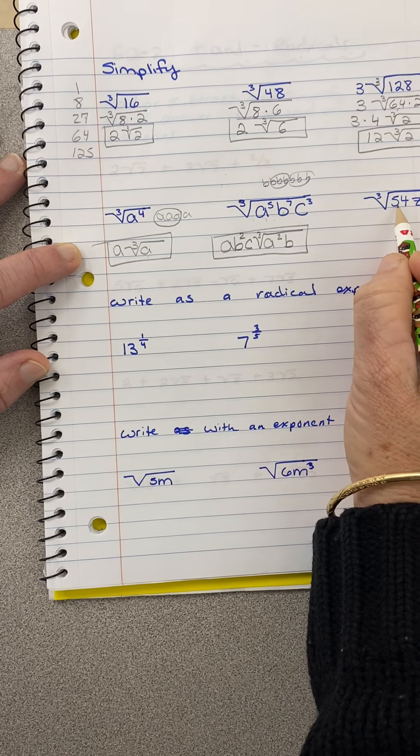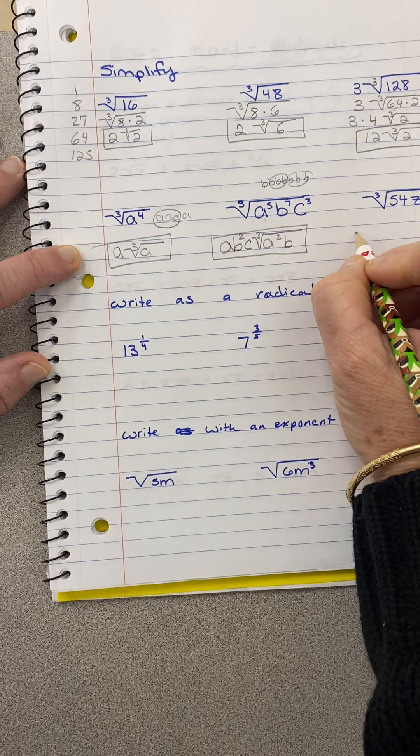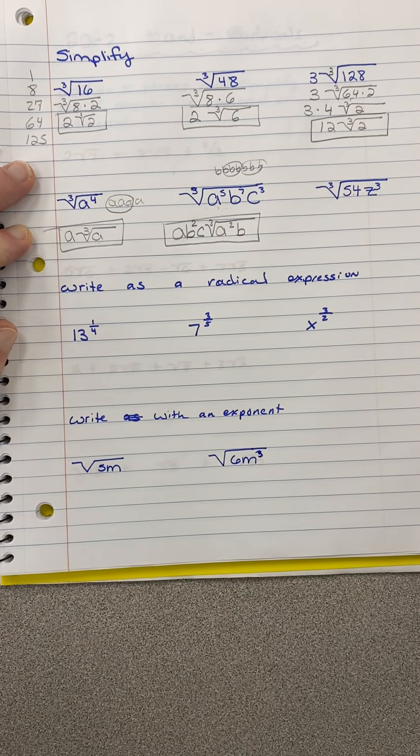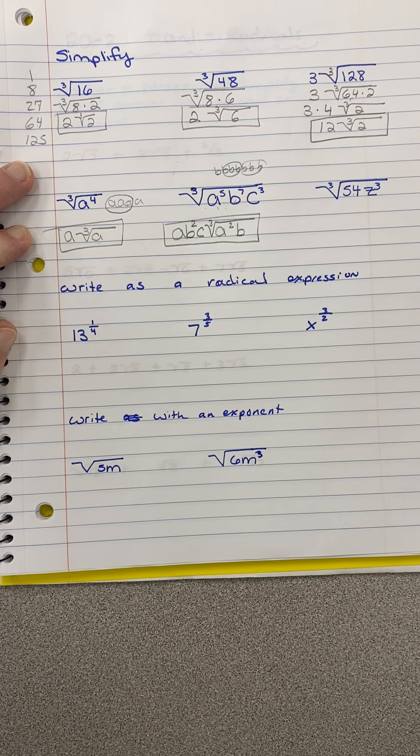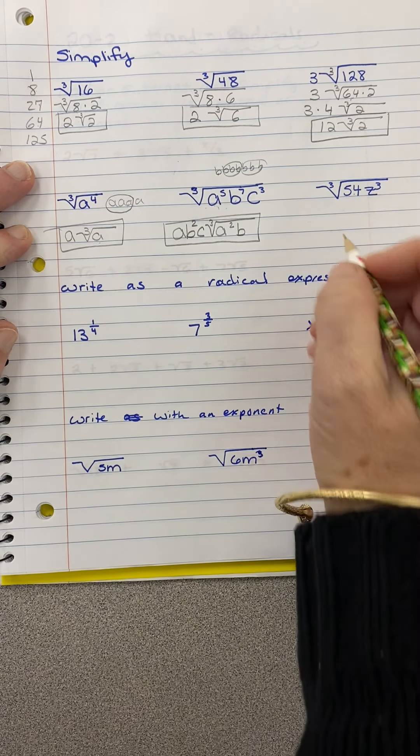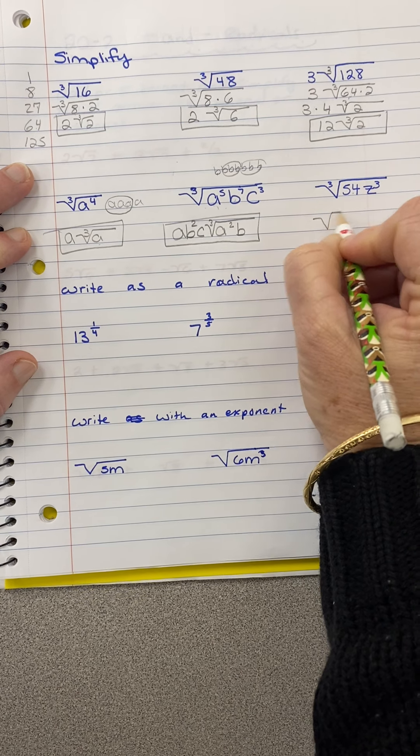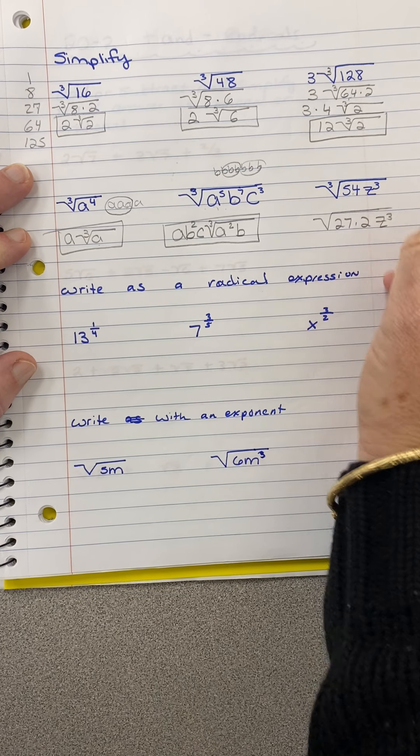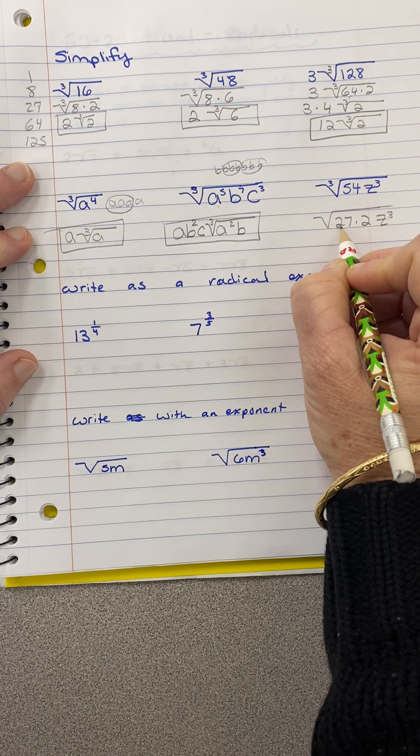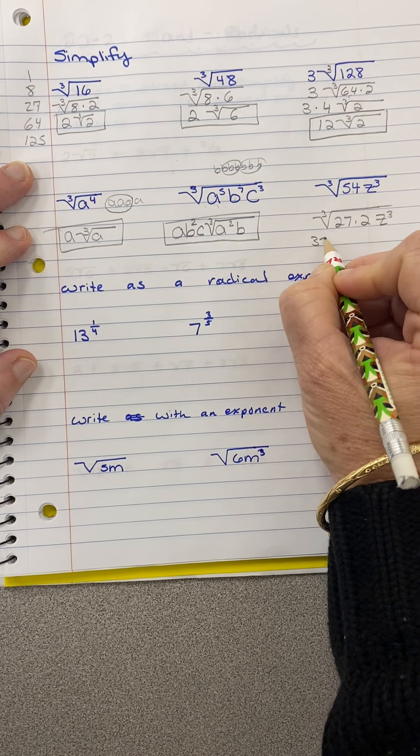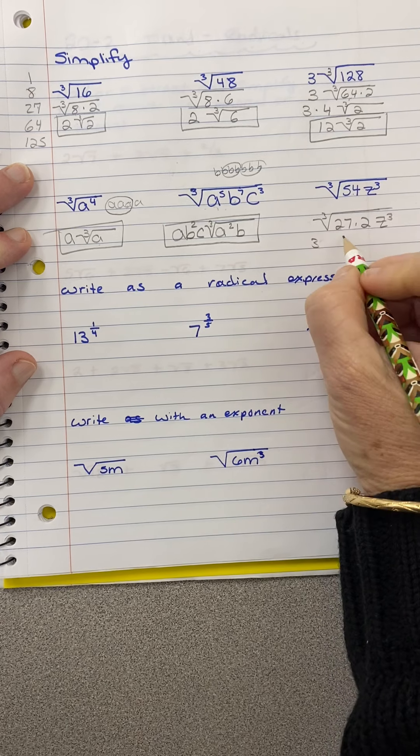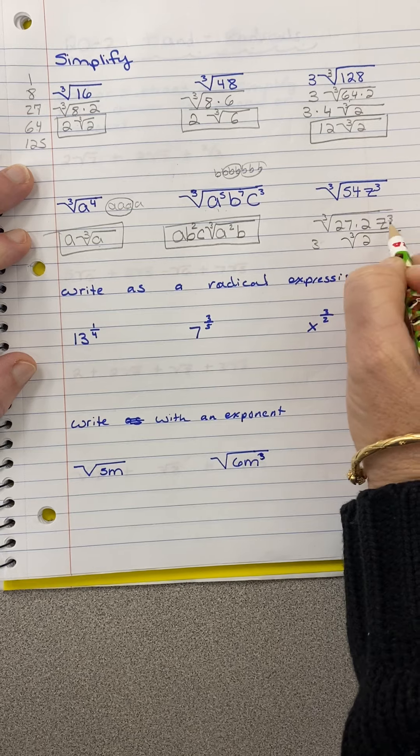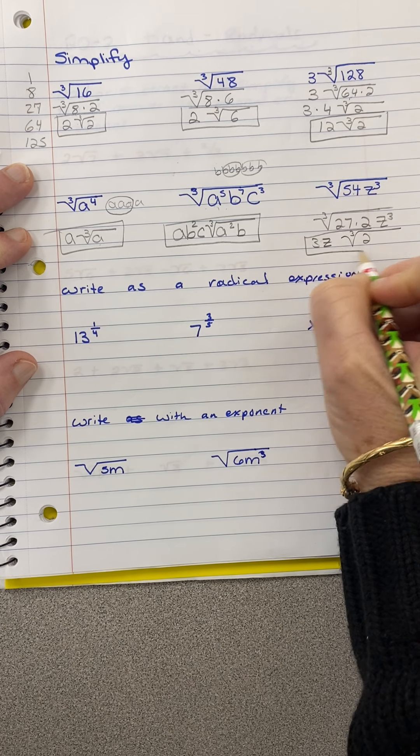Let's look at this one. Cube root of 54. Now I have a number and letters. No big deal. So what perfect cube, I'm still looking at this list, what perfect cube goes into 54? And it's 27. So I'm going to say that's 27 times 2, and then I have Z cubed. The cube root of 27 is 3, so 3. And then Z, I'm doing cube roots so I need 3 of them. So that means it comes out. And that is my answer.